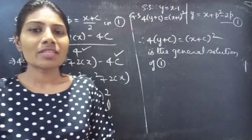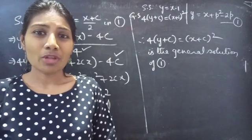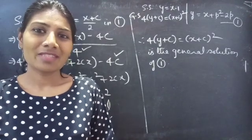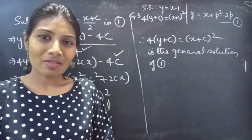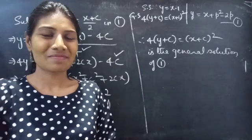So we have seen a problem from solvable for y in this video. We got singular solution y equals x minus 1 and general solution 4(y plus c) equals (x plus c)². Hope you understood. See you in the next video. Bye-bye.